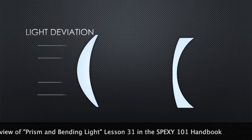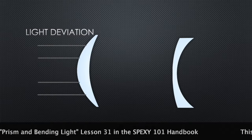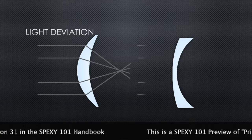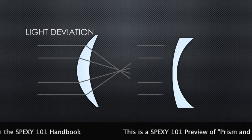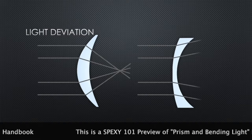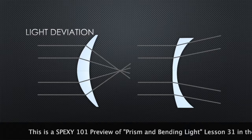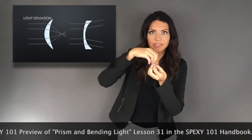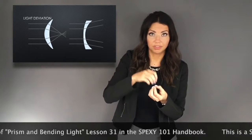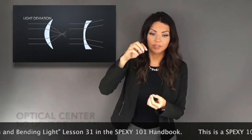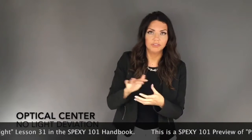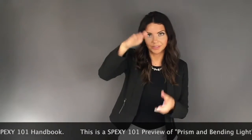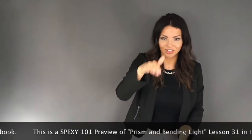The light will come in and hit the plus lens and it'll actually converge together, and on the minus lens it'll hit the lens and spread apart. So one spreads light and the other brings light together. Where the two prisms meet — apex to apex or base to base — that's what we call the optical center. At the optical center there's actually no deviation of light; it goes right through the lens without spreading or converging.